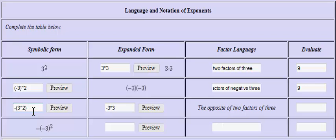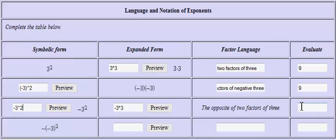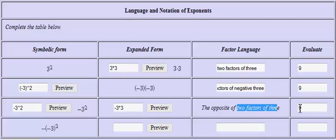To evaluate the problem, you can think of two factors of three giving you nine, and we want the opposite of that, so you take the opposite of nine. Or you could think of it as: since the signs were different, the answer comes out negative.